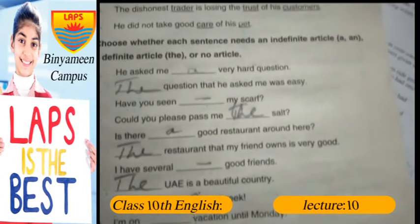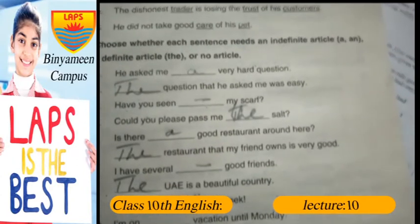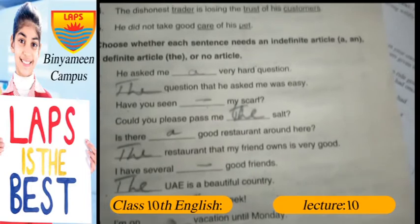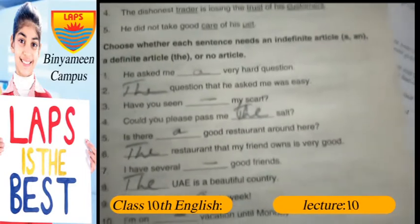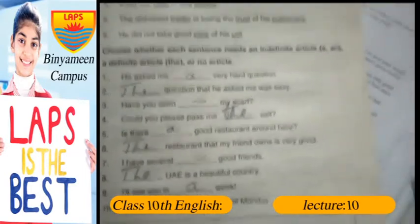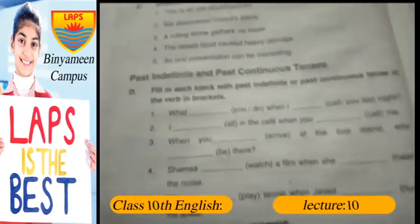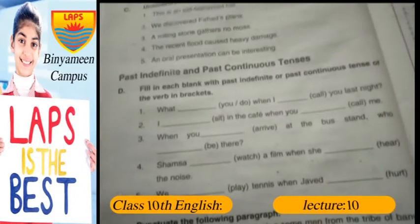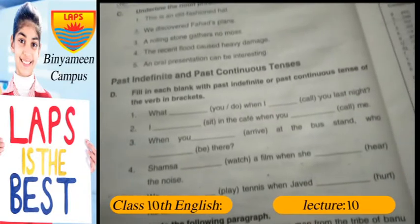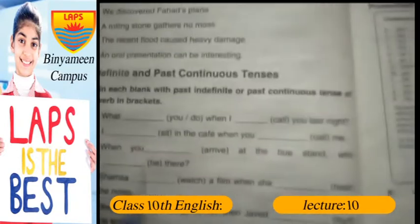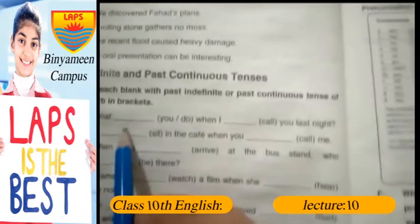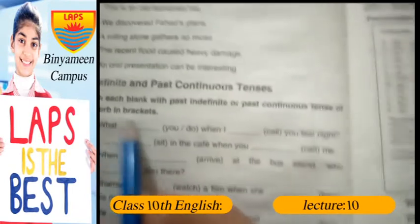We will use an article for Part D, which we will solve now. It is written: fill in each blank with past indefinite or past continuous tense of the verb in brackets.